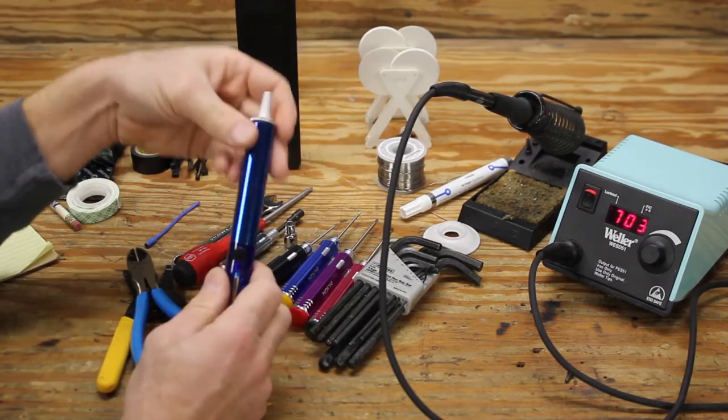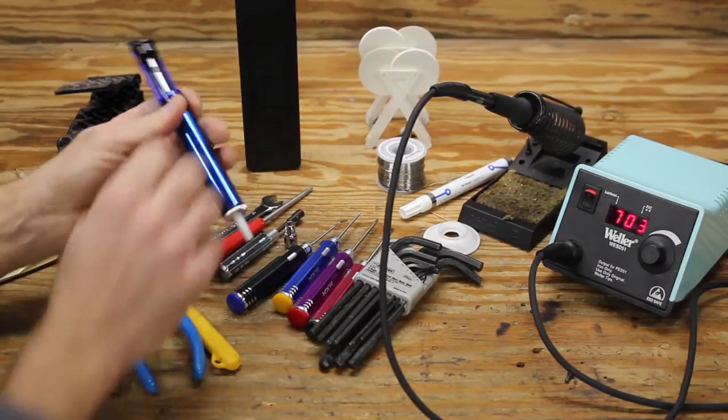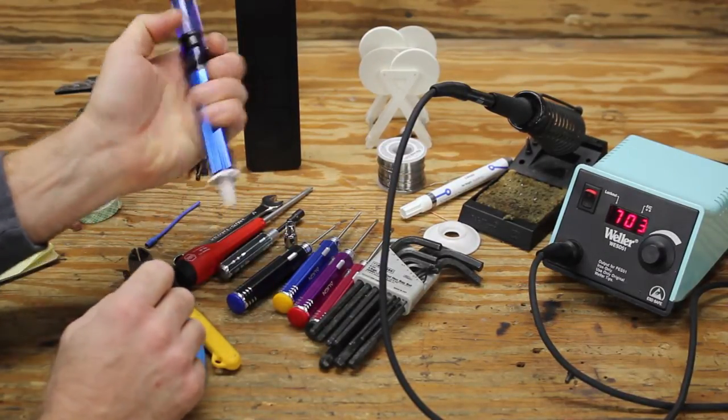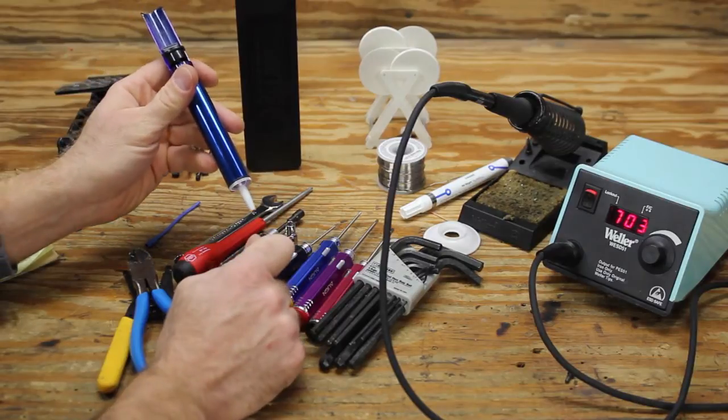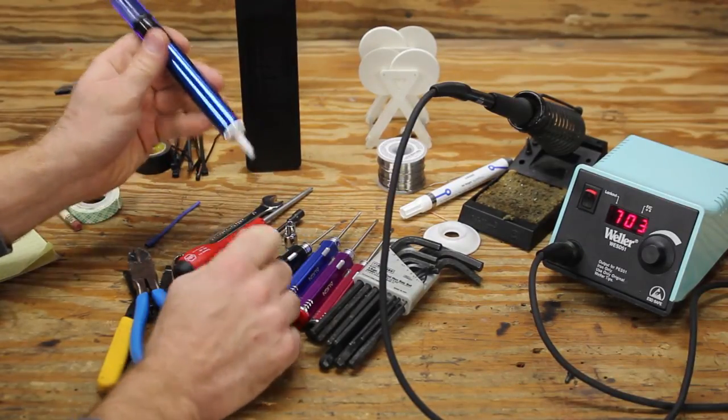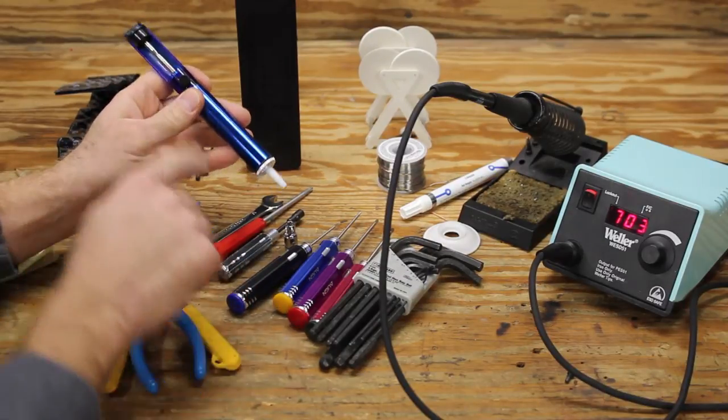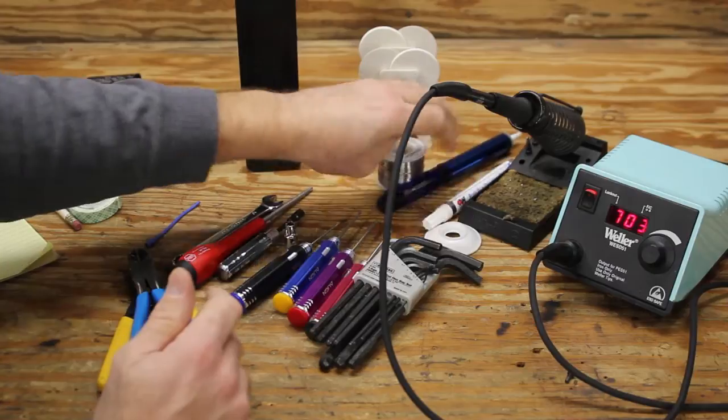Also for soldering, this is called a solder sucker. It's just a spring-loaded plunger with a tip. What this does is you press the plunger down and it locks. You melt your solder that you want to remove, put the nozzle down into the solder when it's liquid, press the button and it sucks it up. It's very effective, it works great.